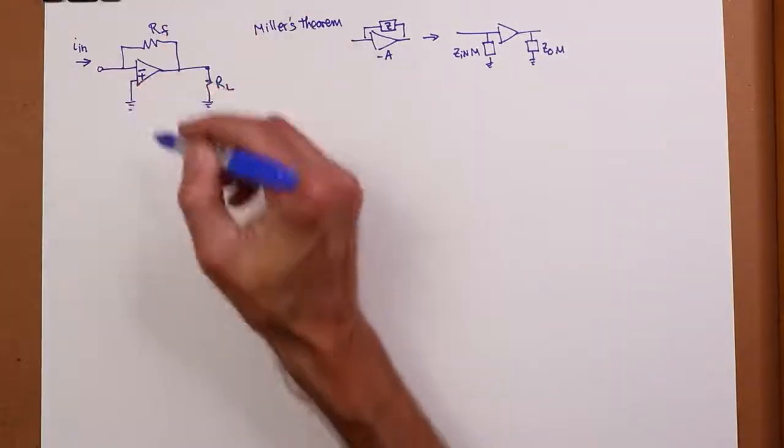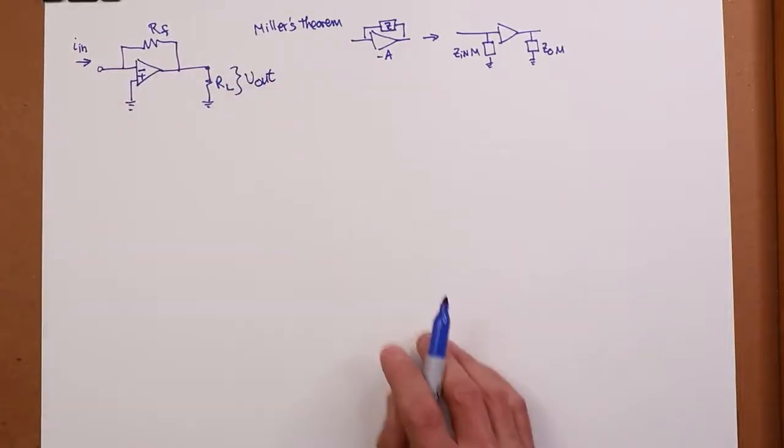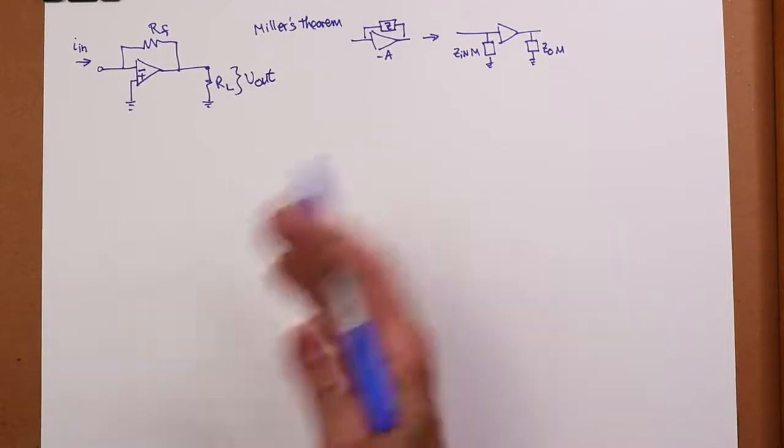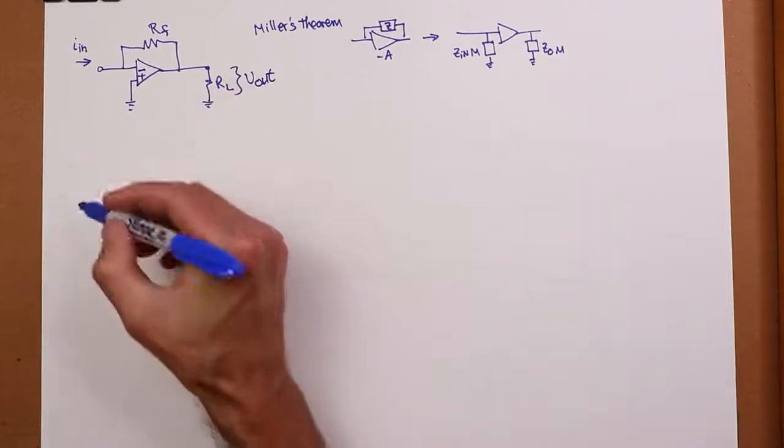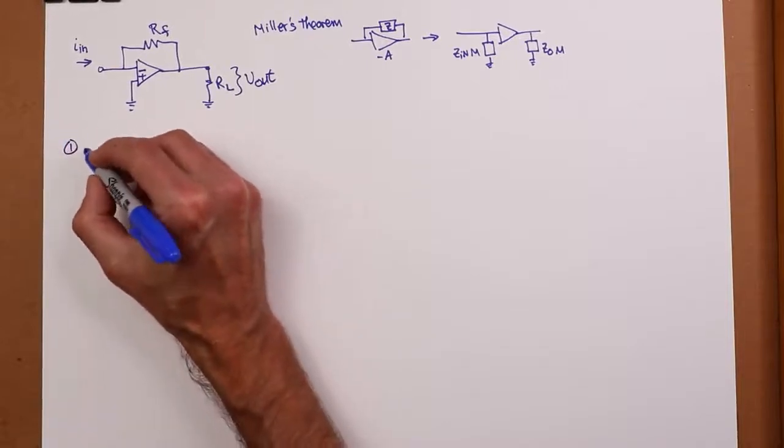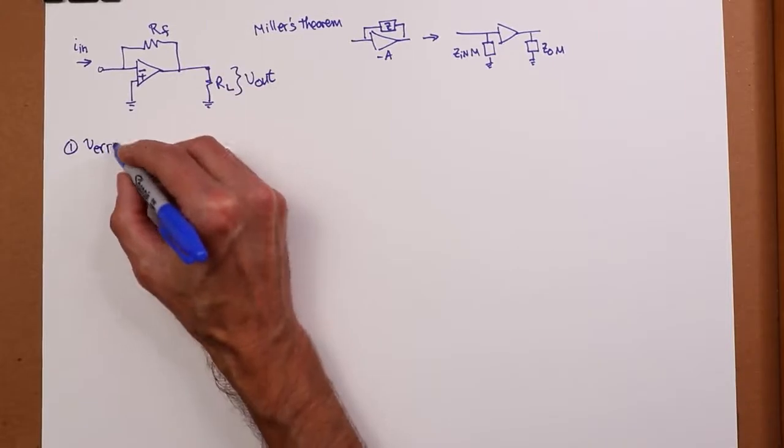How do we analyze this? So this has an input current and an output voltage. I want to come up with an equation for V out. Let's remember those two rules that we came up with last time. Number one, V error, which is the difference between the plus and minus inputs, is approximately zero.